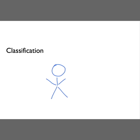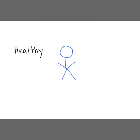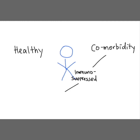First, we want to know something about our patient — whether they're healthy or whether they have any comorbidities. The comorbidities are separated into conditions that make them more prone to infection. That can include conditions such as diabetes, HIV infection, and medications such as anti-rejection medications and steroids. Other comorbidities we care about also include existing lung problems such as COPD and asthma.